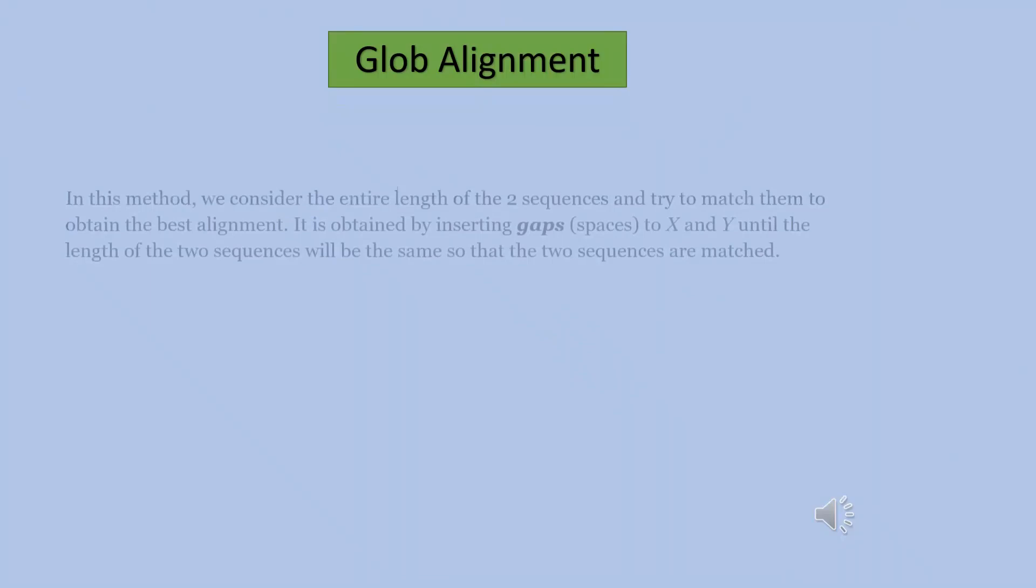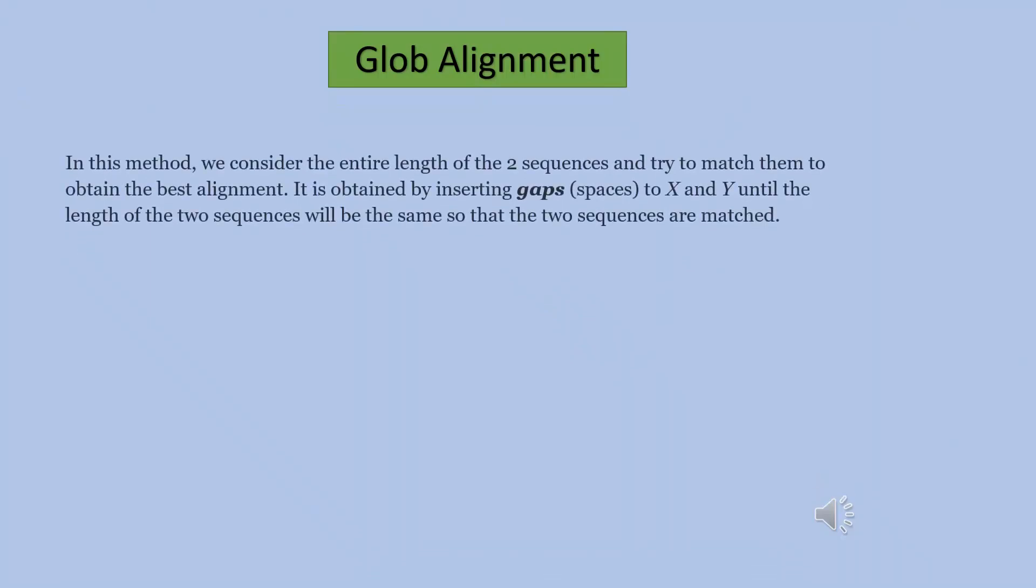Let us move to global alignment. In this method, we consider the entire length of the two sequences and try to match them to obtain the best alignment. It is obtained by inserting gaps or spaces to X and Y until the length of the two sequences will be the same so that the two sequences are matched.